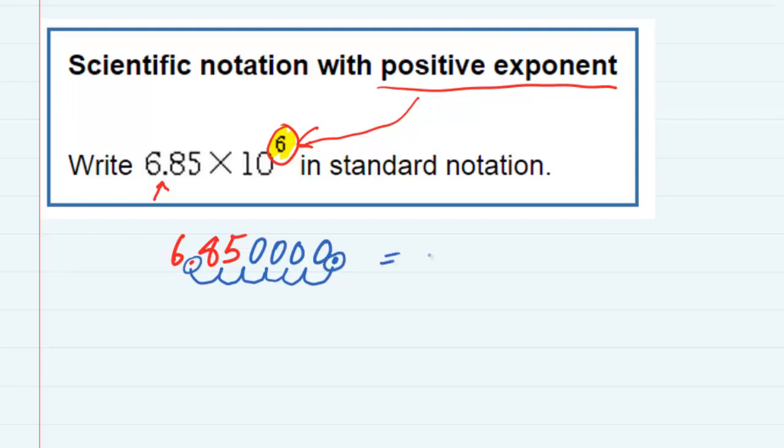So my new number is 6, 8, 5, and then 1, 2, 3, 4 zeros, putting in the commas for place value, 6,850,000.